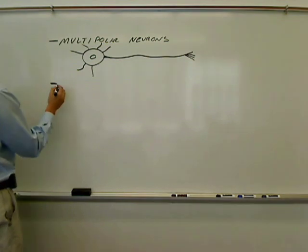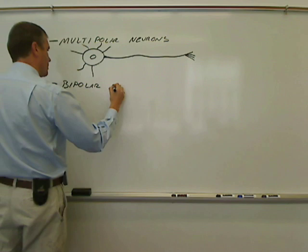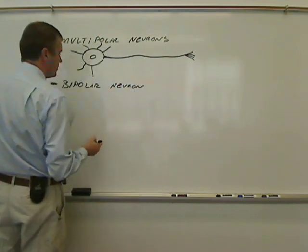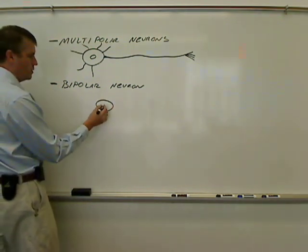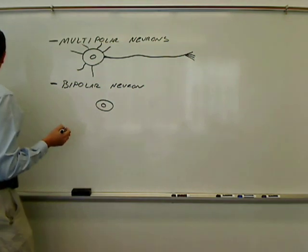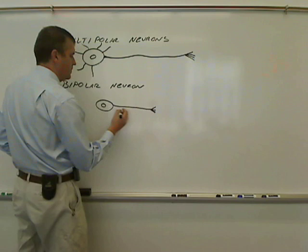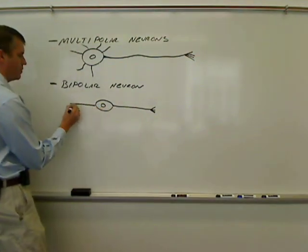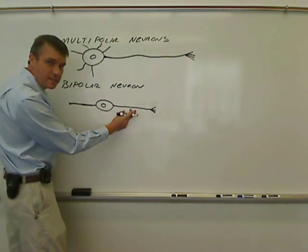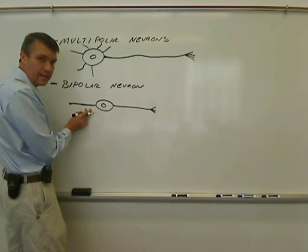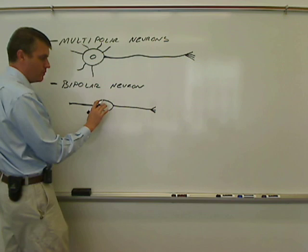The next one is a bipolar neuron. For bipolar neurons, we have a cell body with a nucleus, and then coming out of one side we have a process, and coming out of the other side we have a process. Usually one of these processes is an axon, and the other one is a dendrite. But again, bipolar because coming from the soma, or cell body, we have only two processes.